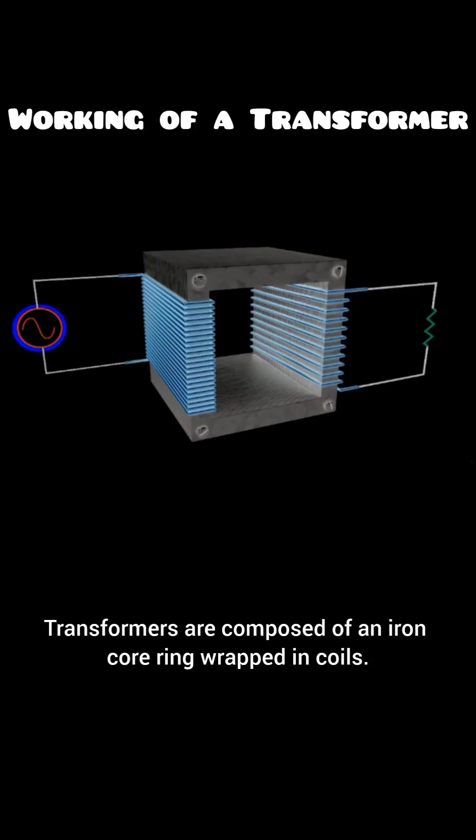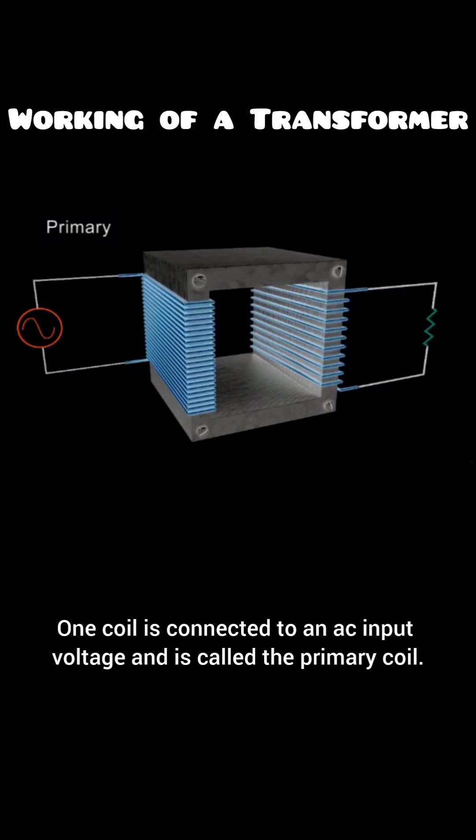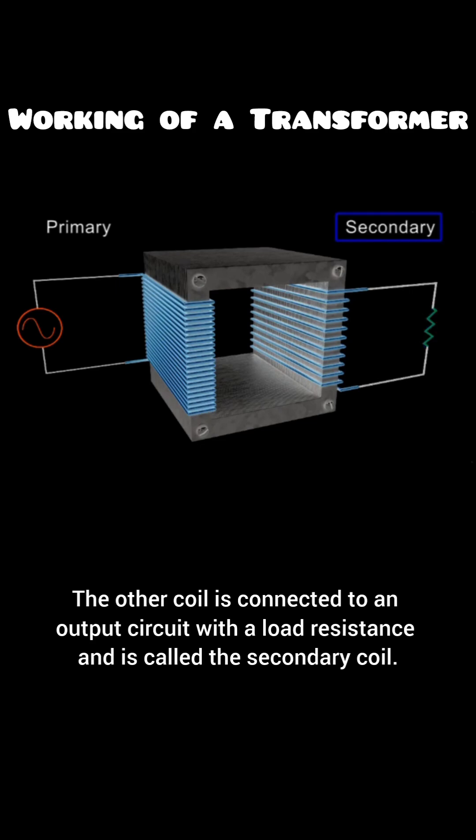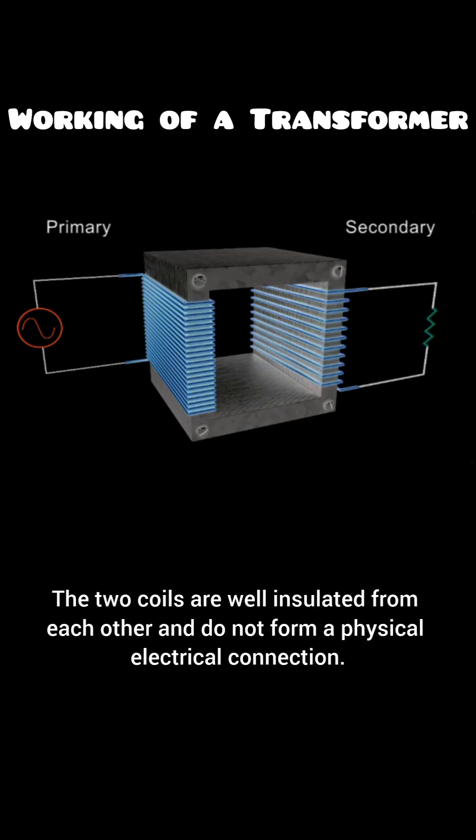Transformers are composed of an iron core ring wrapped in coils. One coil is connected to an AC input voltage and is called the primary coil. The other coil is connected to an output circuit with a load resistance and is called the secondary coil. The two coils are well insulated from each other and do not form a physical electrical connection.